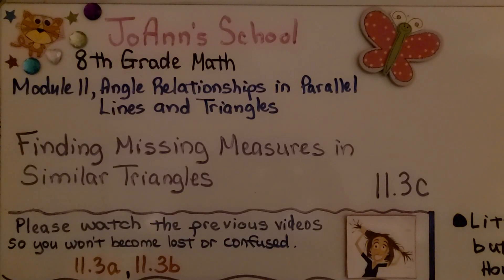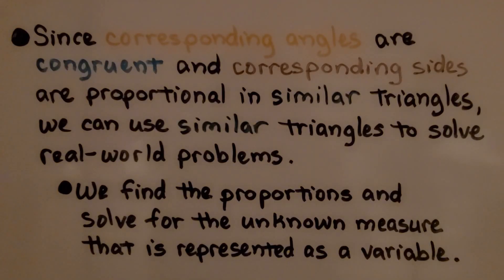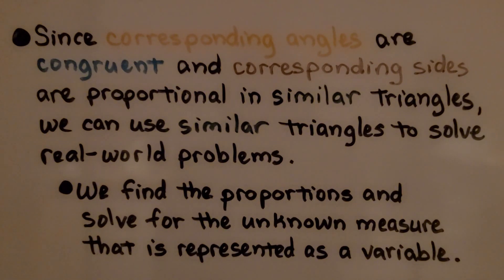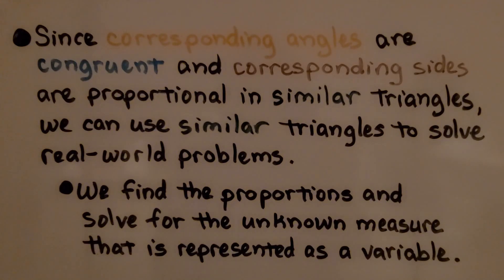Finding Missing Measures in Similar Triangles, Lesson 11.3C. Since corresponding angles are congruent and corresponding sides are proportional in similar triangles, we can use similar triangles to solve real-world problems. We find the proportions and solve for the unknown measure that is represented as a variable.